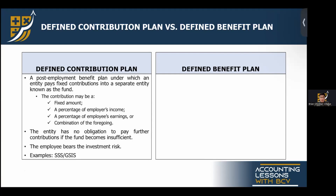Under a defined benefit plan, the obligation is to provide the agreed benefits to employees. The benefit amount is defined from the start — we already know how much the employee will receive upon resignation. In a defined contribution plan, we know the contribution but not the final benefit, since the benefit depends on fund performance. Under a defined benefit plan, regardless of fund performance, the benefits to employees are finalized.